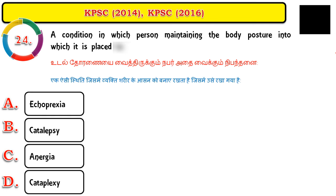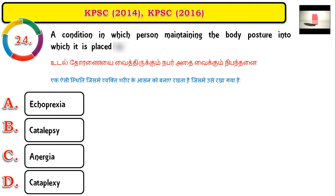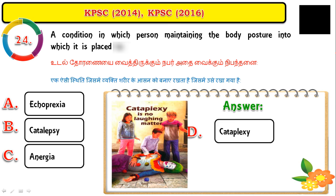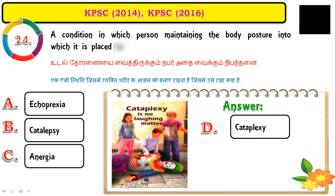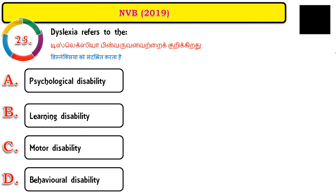Question number twenty-four: a condition in which a person maintains the body posture into which they are placed by someone is called cataplexy. Even if the posture is too difficult, the person will maintain that same body posture for a longer period.